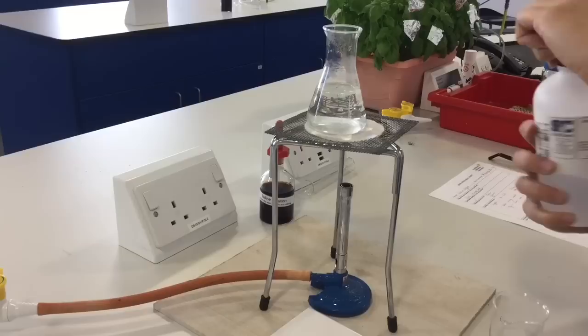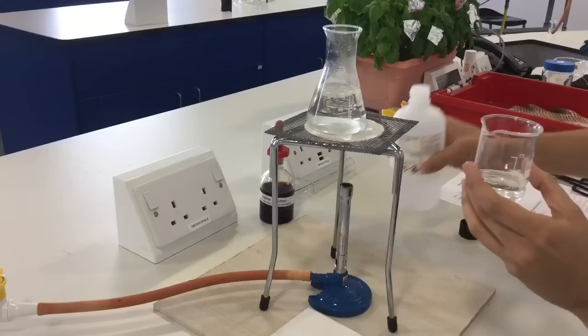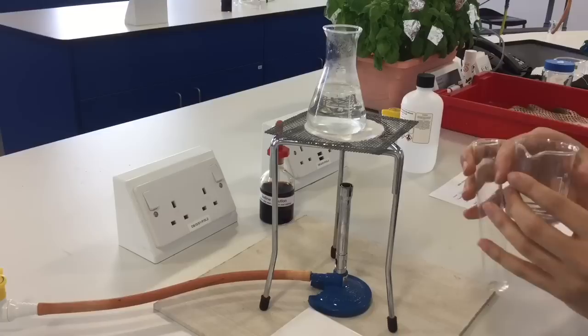The next step is to decolorize our leaf using ethanol, which is basically pure alcohol. We only need a small amount, just enough to submerge the leaf. If I measure out 25 milliliters, that should be more than enough, and that's going to go straight into our boiling tube.